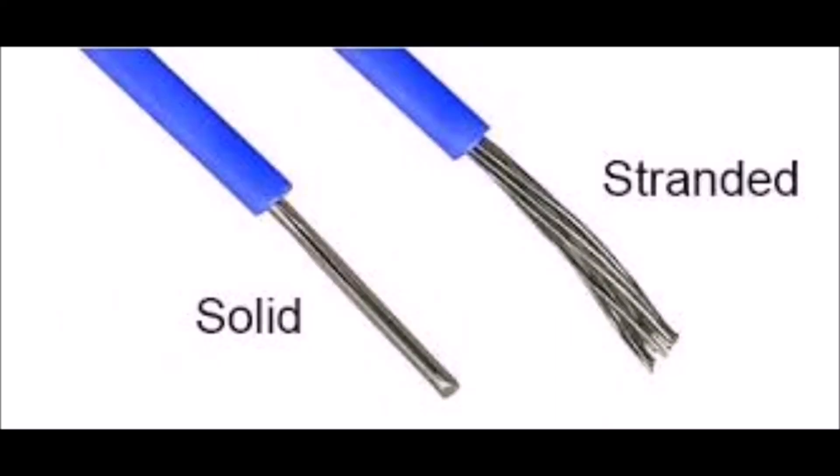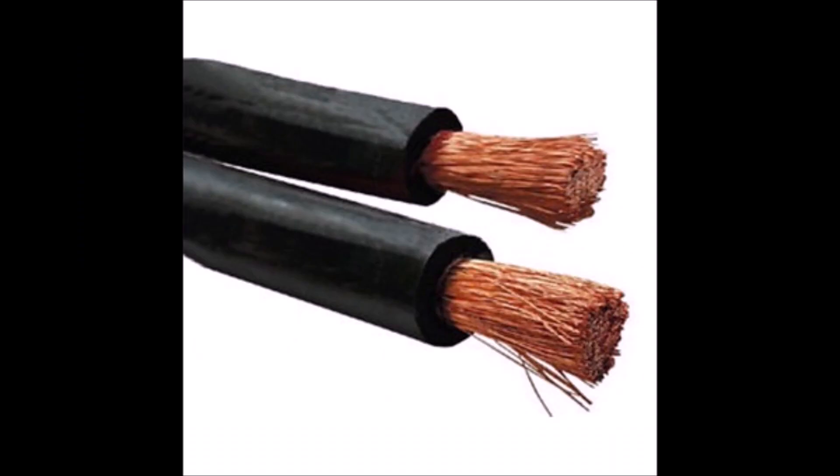One other note is that wire technically means a single conductor and cable means multiple conductors in the same sheathing. For low voltage DC wiring, that means either a solid core conductor that is very rigid and hard, or a stranded cable with multiple wires together that's much softer and easier to manage.